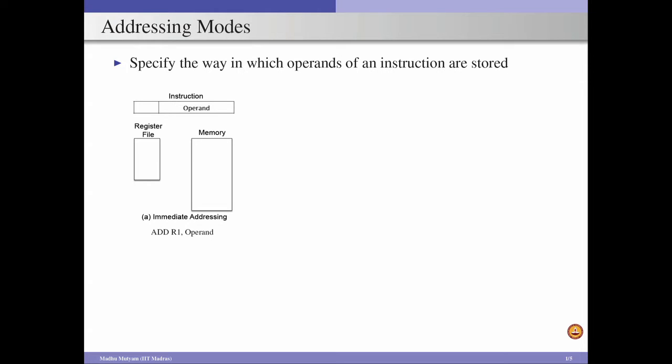In this module we are going to discuss 6 addressing modes, though of course there are several addressing modes in various ISAs. We start with immediate addressing. I am going to explain these addressing modes with a pictorial representation. Consider an instruction which consists of two parts: the opcode field and the operand field. In the case of immediate addressing, the operand field actually contains the actual value the instruction is referring to.